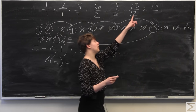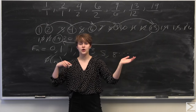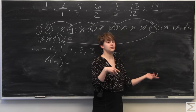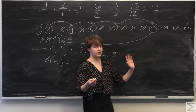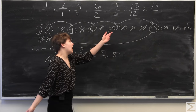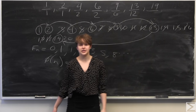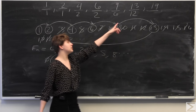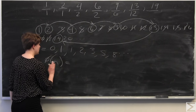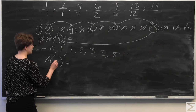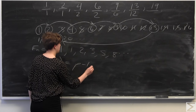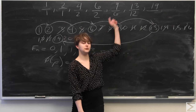For any prime number, every integer less than it is coprime to it, because by definition a prime has no other divisors besides 1 and itself. So phi(p) = p − 1 for any prime p. This is our giveaway: 12 = phi(13), because 13 is prime.